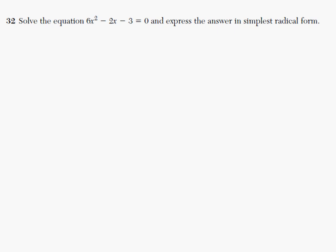Solve the equation 6x squared minus 2x minus 3 equals 0 and express the answer in simplest radical form.